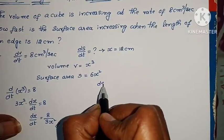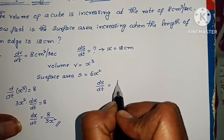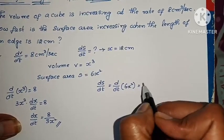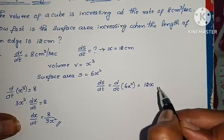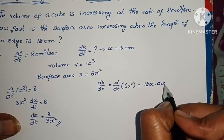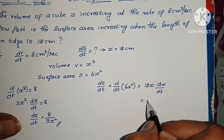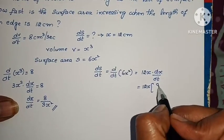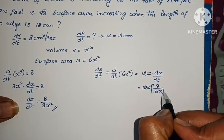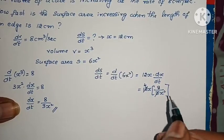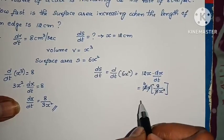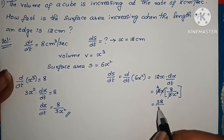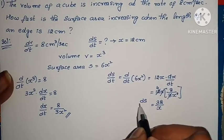Now we need dS/dt. d/dt of S, S is 6x². Differentiate: 12x into dx/dt. So 12x into dx/dt value is 8 by 3x². 3 cancels, x cancels. 8 times 4 is 32 by x. This is dS/dt.